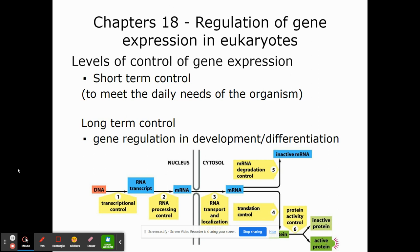The diagram shows all the levels of control where we can regulate gene expression, with the ultimate product being an active protein. We can have controls at the transcriptional level, RNA processing level, RNA transport level, translation level, messenger RNA degradation level, and at the protein activity level. So we can control gene expression at many more places than we can in a prokaryote.